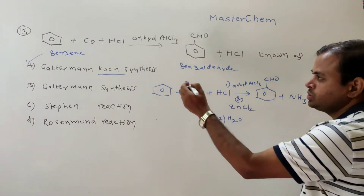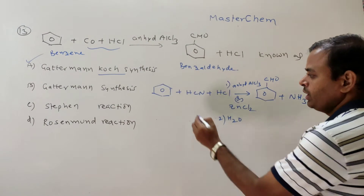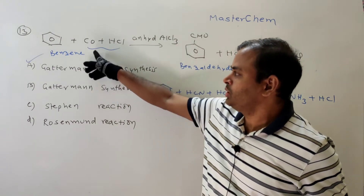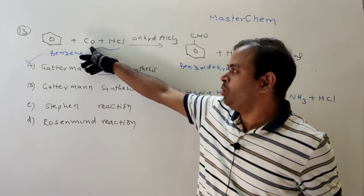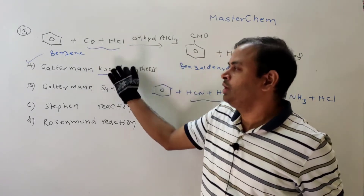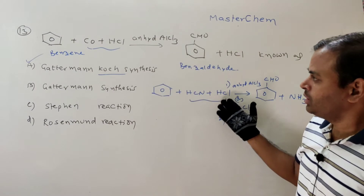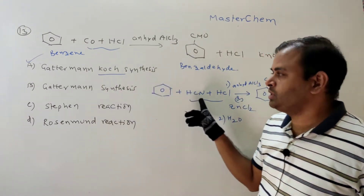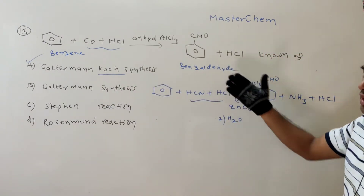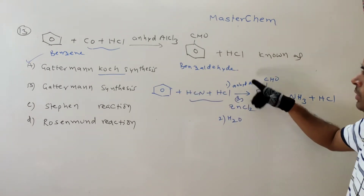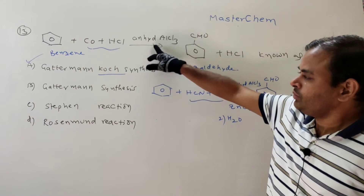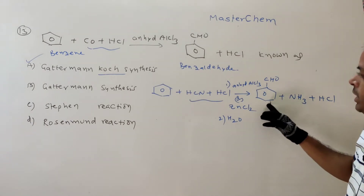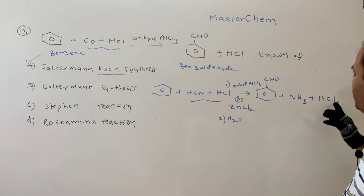The difference: Gattermann-Koch uses carbon monoxide and HCl (remember as CO-CH), while Gattermann synthesis uses HCN and HCl in place of carbon monoxide. Both reactions give benzene converted to benzaldehyde. In both cases, anhydrous AlCl₃ (Lewis acid) is used and the second step is hydrolysis, which gives benzaldehyde and ammonia and HCl.